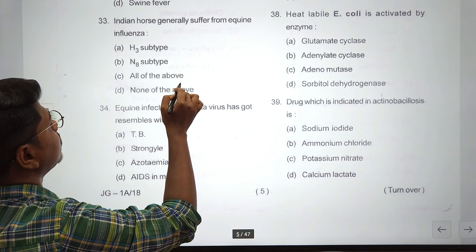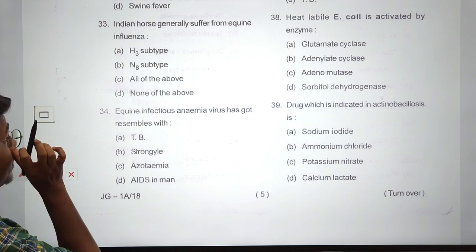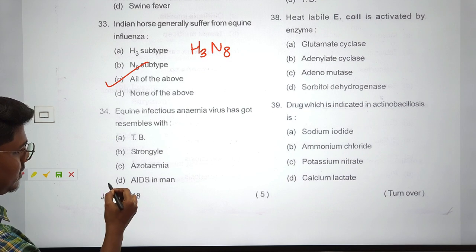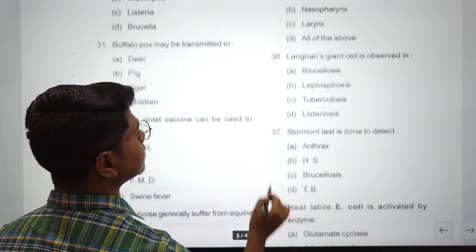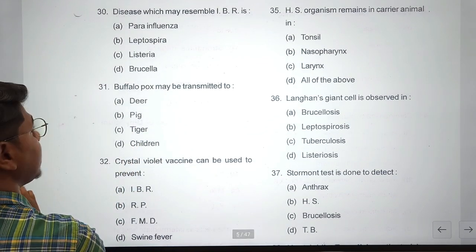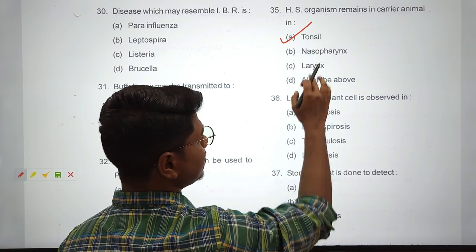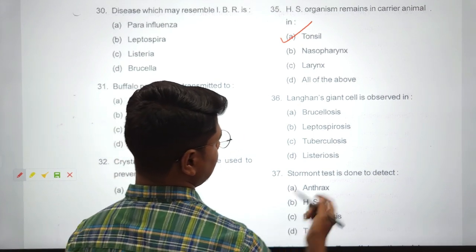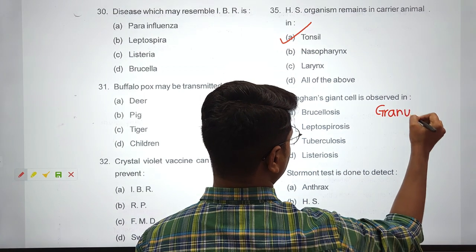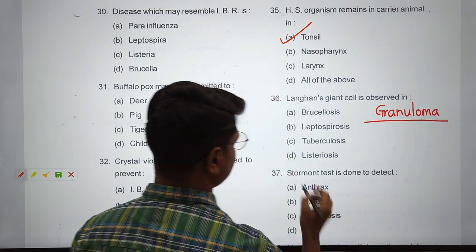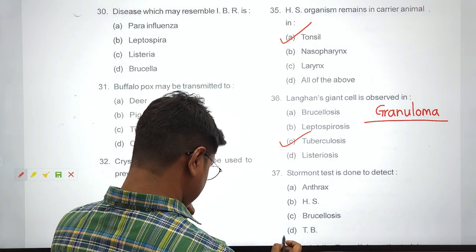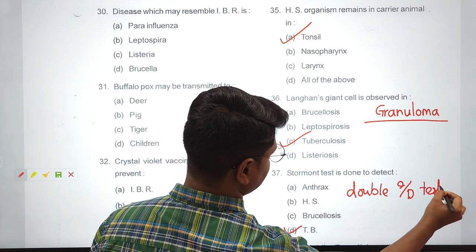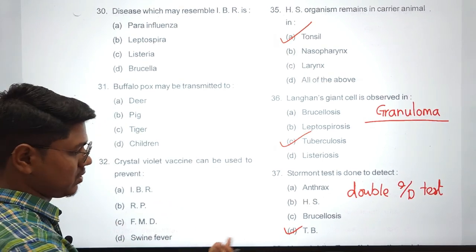Crystal violet vaccine can be used to prevent swine fever. Don't confuse with African swine fever. Here swine fever is classical swine fever, also known as hog cholera. African swine fever is caused by iridovirus. The Indian horse generally suffers from equine influenza - H3N8 hemagglutinin and neuraminidase. Equine infectious anemia virus resembles HIV virus that causes AIDS in men. HS organism remains in carrier animal in tonsil. Langhans giant cell is observed in granulomatous lesion, very characteristic to tuberculosis. Stormont test is done to detect tuberculosis - this is basically a double intradermal test that improves sensitivity.